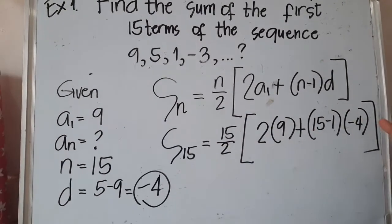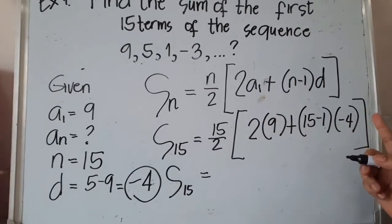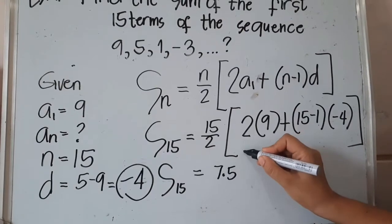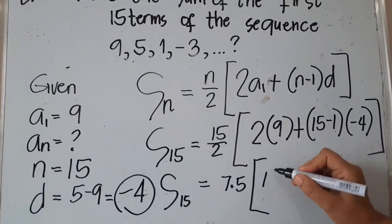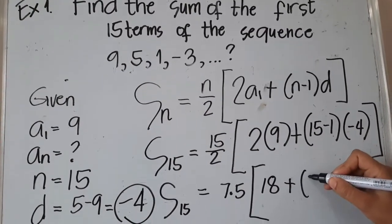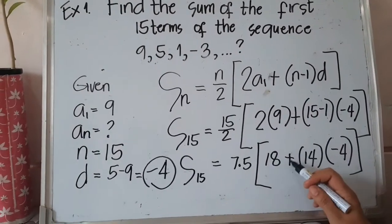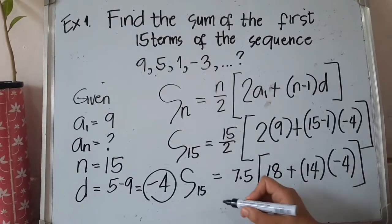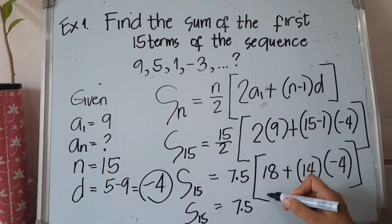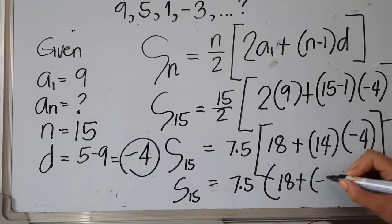We've substituted all values, so now we apply PEMDAS. 15 divided by 2 equals 7.5. Then 2 times 9 equals 18, and 15 minus 1 equals 14 multiplied by negative 4. We must do multiplication before addition, so 14 times negative 4 equals negative 56. The expression inside becomes 18 plus negative 56.